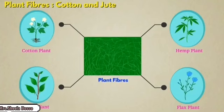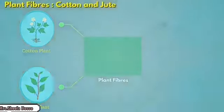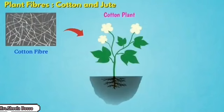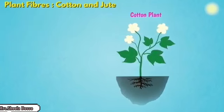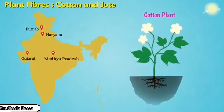Some plant fibers are cotton, jute, flax, and hemp — these are all natural plant fibers. Today we will see how cotton fibers are made. The cotton plant is a shrub — it is a small plant with a woody stem. It usually grows in black soil and grows very well there.